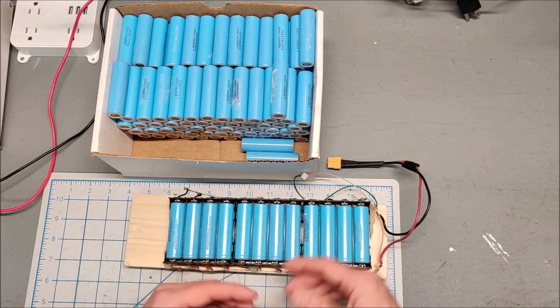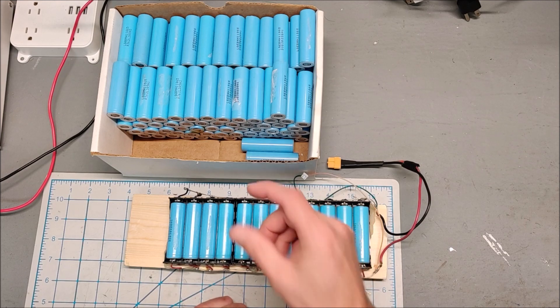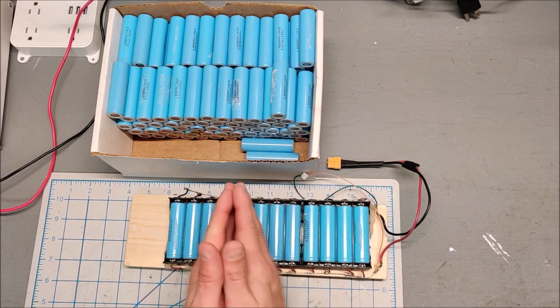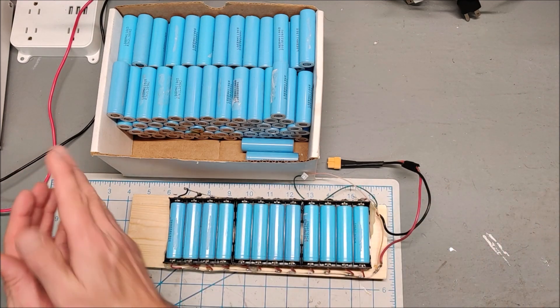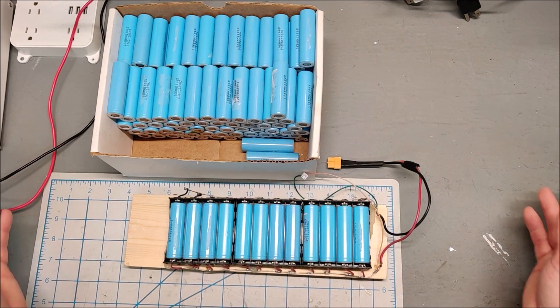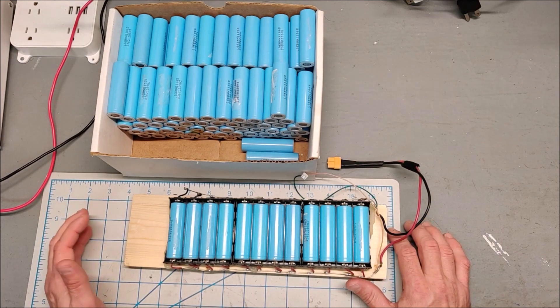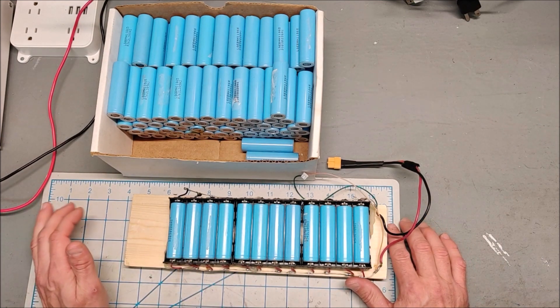On those TP4056, those chips cost about a dollar a chip. The holder will cost you another dollar. And then you've got to put them all on a board. Each one will need a separate five volt supply. It's kind of a weird way to do it. I see a few people build those mega chargers, but to me that never made any sense.